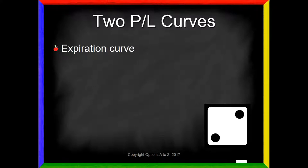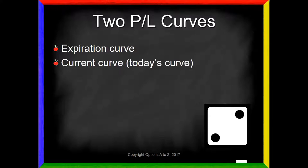The second point to understand is that there are two different profit and loss curves. There's what is called an expiration curve, which is good only at expiration — meaning the final seconds of the option's life. That's the only time you should be looking at that graph for answers. The second curve is called the current curve, sometimes called today's curve, and it gives you the answers for today.